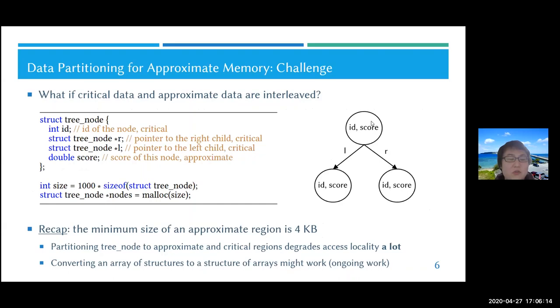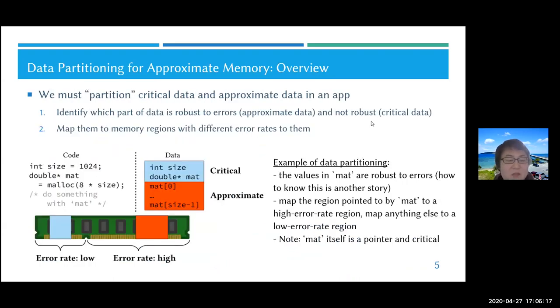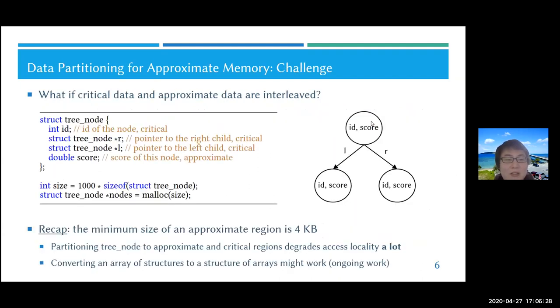Here comes the challenge. In this example of a large matrix, it's fine because we can have a large memory region with the same error rate. But what if critical data and approximate data are interleaved in a small data structure? For example, a structure called tree_node has four members, and one of them called score is approximate. There's an array of this tree_node, and the question is how we can partition them into different memory regions.